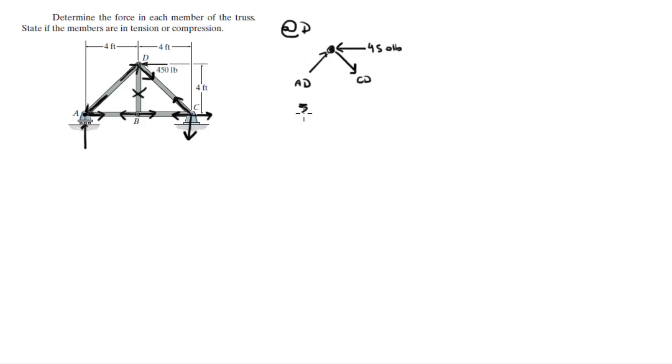So you know that the sum of the forces in the Y is equal to 0. So AD sine of 45 minus CD sine of 45 is equal to 0. So AD is equal to CD.